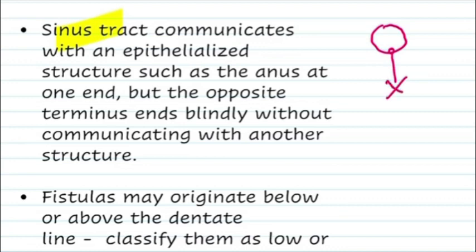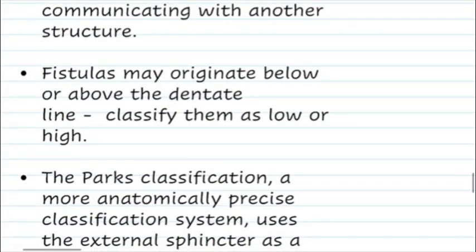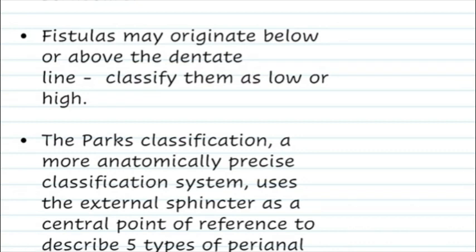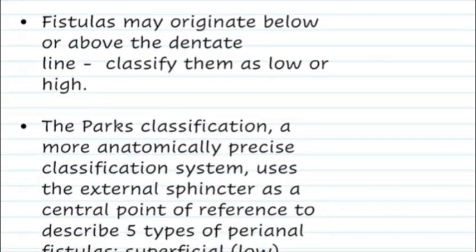There are a few more surgical terms we should know. Fistulas are classified as high or low, or as complex or simple. They are classified as high or low depending on the internal opening — whether it opens above or below the dentate line. We classify them as high when it opens above the dentate line and low when it opens below the dentate line.